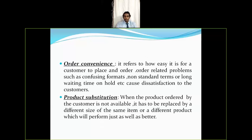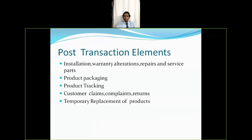The last transaction element is product substitution. When the product ordered by the customer is not available, it must be replaced by a different size of the same item or a different product that will perform just as well or better. If you don't have the stock of the same item, you must substitute the customer with another product — otherwise the customer will go to a competitor.